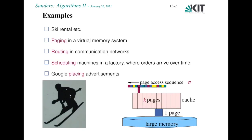In this lecture I will first look at a simple, rather intuitive example — the ski rental problem — and then focus on a problem more relevant within computer science, namely paging in a virtual memory system. Other examples I'm not covering here are routing in communication networks, scheduling machines in a factory where orders arrive over time, or a web company placing advertisements.